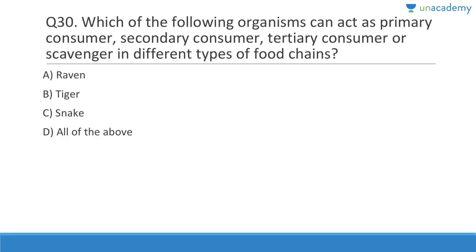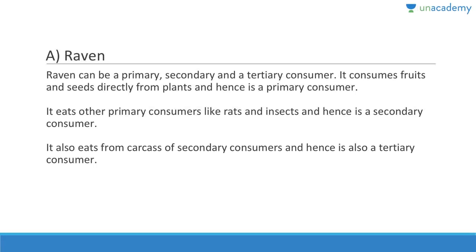Question 30: Which organism can act as primary consumer, secondary consumer, tertiary consumer, or scavenger in different types of food chains? Answer is A, raven. A raven can be a primary, secondary, or tertiary consumer — it consumes fruits and seeds directly from plants, eats primary consumers like rats, and also eats from the carcass of secondary consumers, making it a tertiary consumer or scavenger.